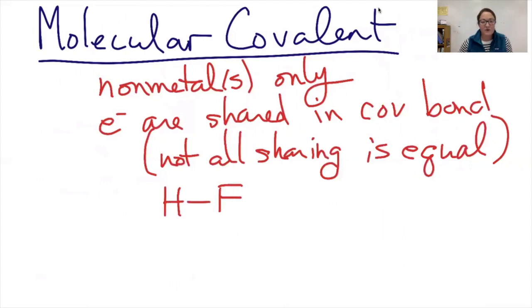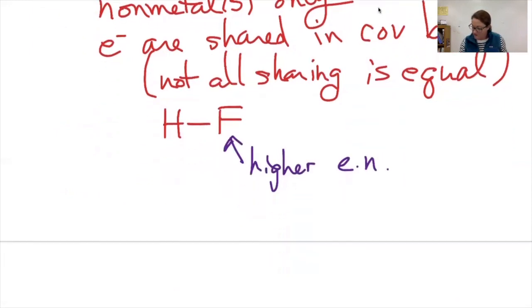So for example, when I draw this single line between hydrogen and fluorine, it's implying that hydrogen and fluorine are sharing those two electrons. However, we know that fluorine has a higher electronegativity. And since fluorine has a higher electronegativity, it pulls on the electrons harder. And as a result, the electrons spend more time over there than they do over here. And this can give rise to polar molecules.